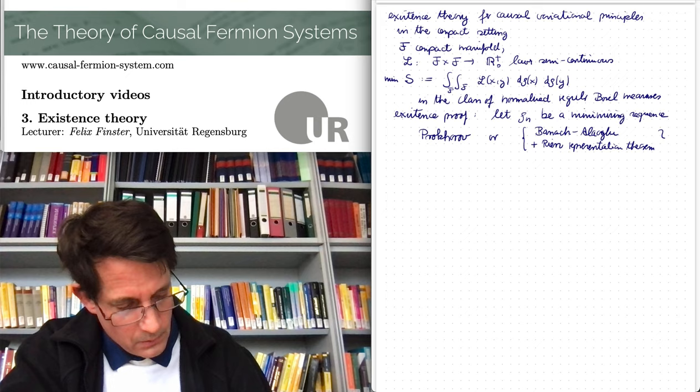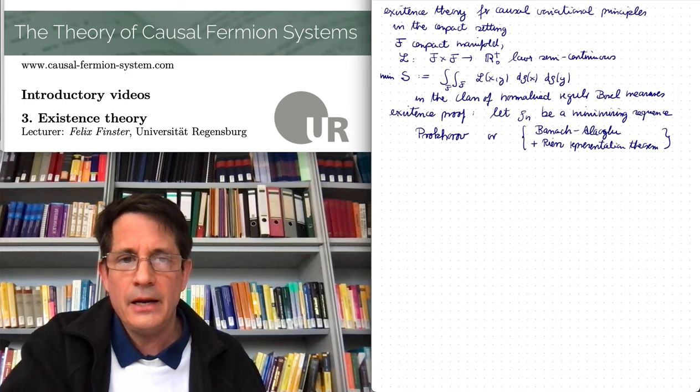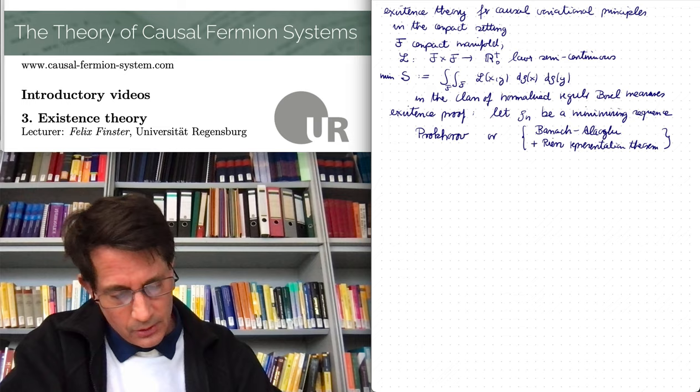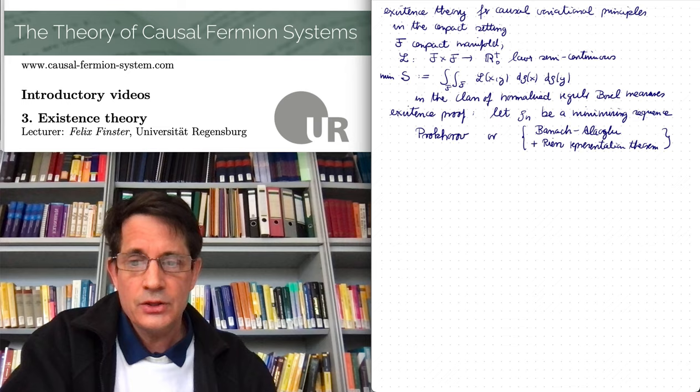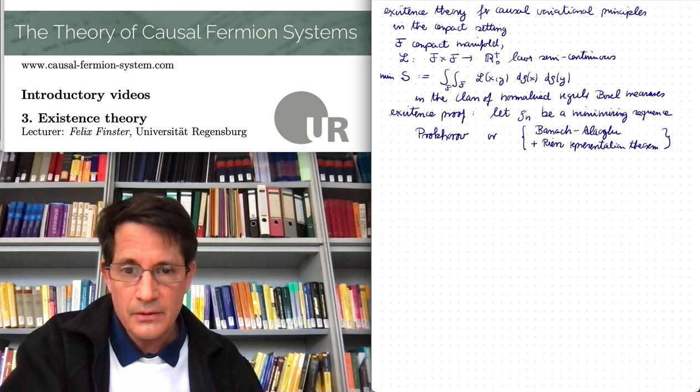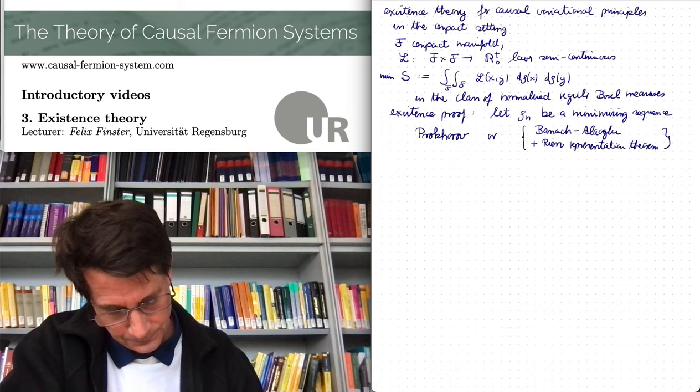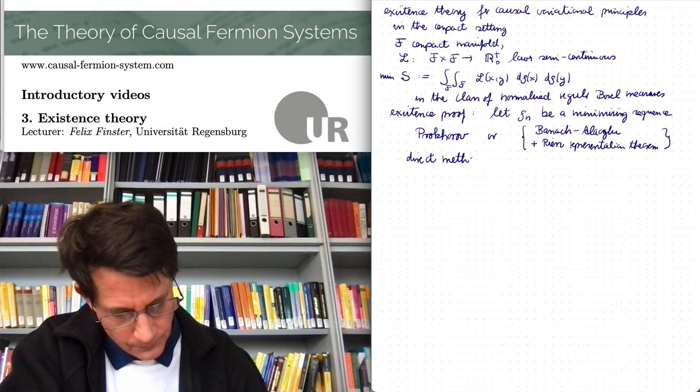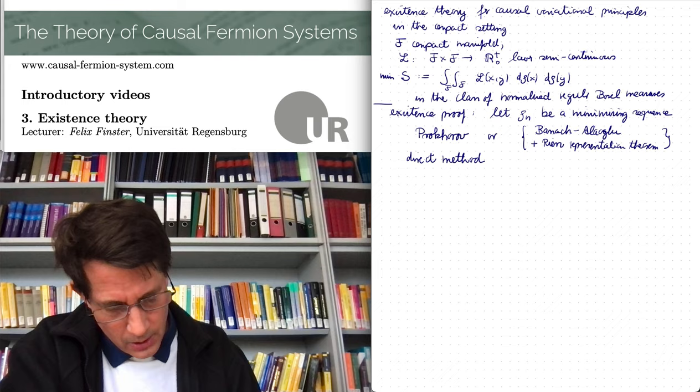And this gives us the desired compactness, so there is a subsequence which converges into whatever C0 star topology. So it converges as a measure and using that the Lagrangian is lower semi-continuous one can also verify that the action is lower semi-continuous. So therefore the limit measure is indeed the desired minimizer. So this is just a direct method and somehow there are no major difficulties coming up. So this is all rather straightforward. And we just use the direct method. And as I said if you want to see more details just check out our online course.